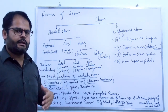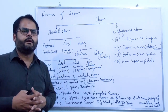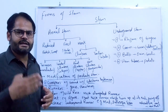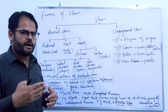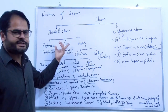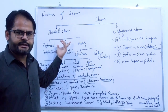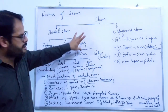Examples of erect stem include the plant Acacia nilotica and Morus alba, which clearly have an erect stem.